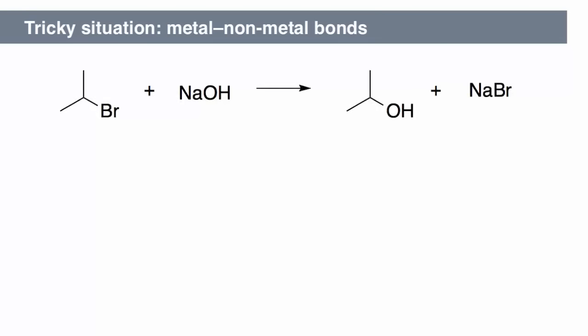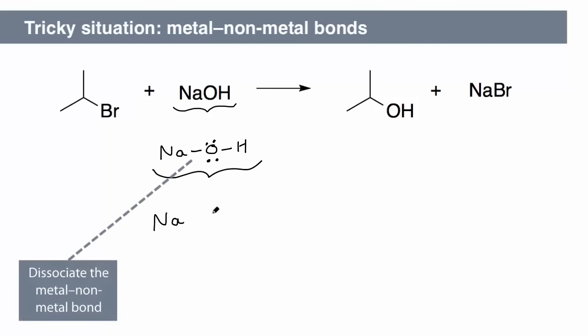To draw the electron-pushing arrows when a metal-non-metal bond is involved, it helps to first dissociate those parts into their constituent ions. We expand the structure to reveal the electrons, then separate the metal and non-metal. In this case, the sodium and oxygen atoms.